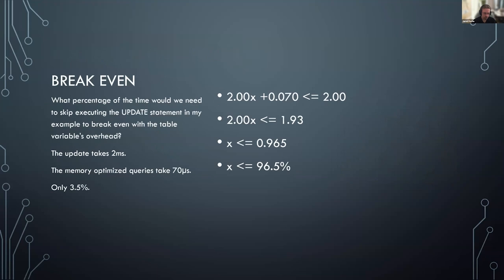I was curious about the break-even point — how many updates would you have to skip for this to come out ahead? After running my example many times, the normal update came down to about two milliseconds average. The overhead for my memory-optimized queries was about 70 microseconds. Doing the algebra: if we skip the update operation only three and a half percent of the time, we come out ahead on this example. To me that says writing operations are really expensive, and it's worth the effort to detect redundant updates in places where you think you might have duplicate data being passed in.